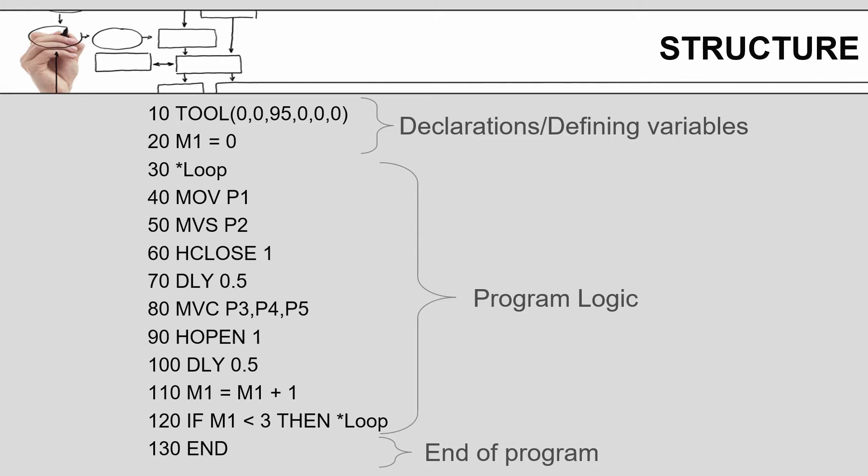Wait half a second, increment my counter. If my counter is less than three, then I go back up to the loop. Otherwise, I complete the program.